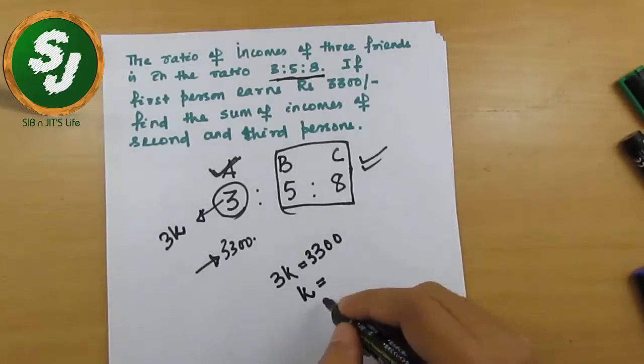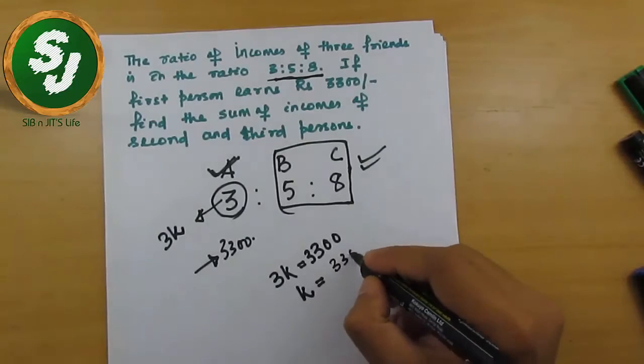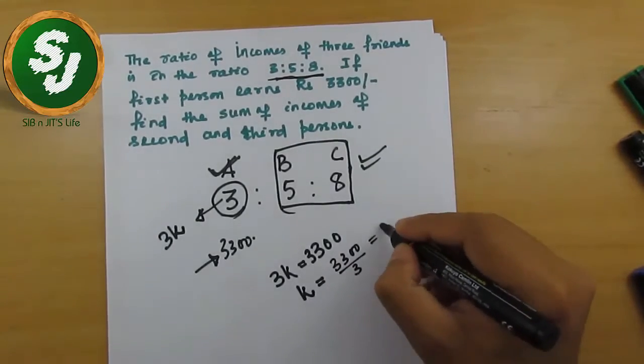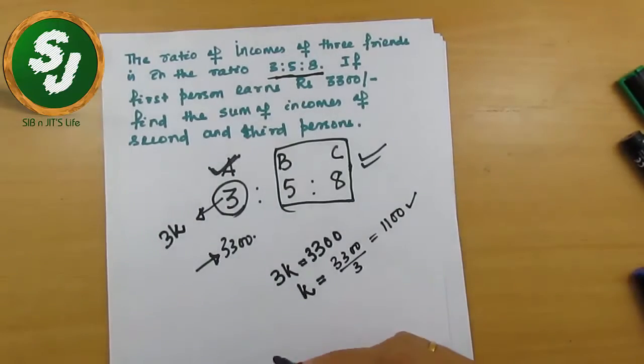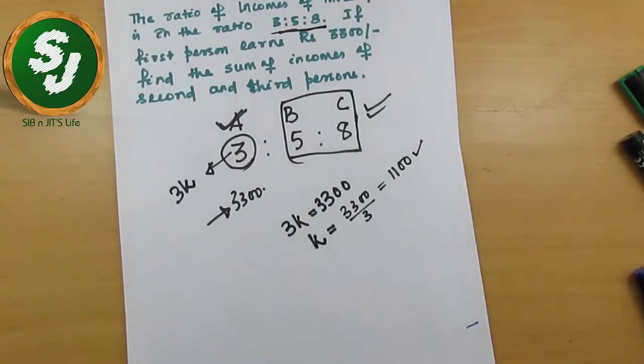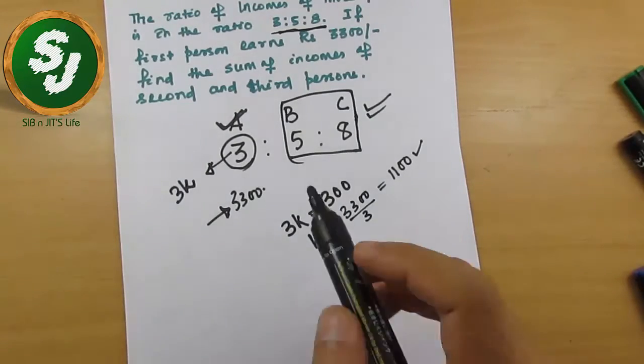K is 3300 divided by 3, which means 1100 is the value of K. You should be ready to answer the question very promptly. Now the question is asking find the sum of incomes of second and third person.